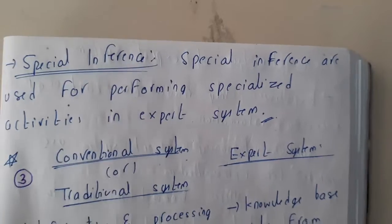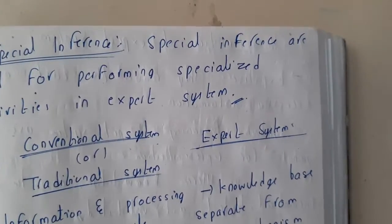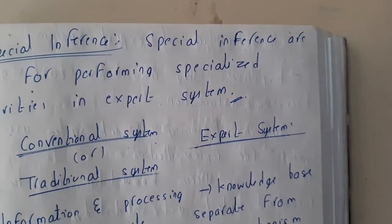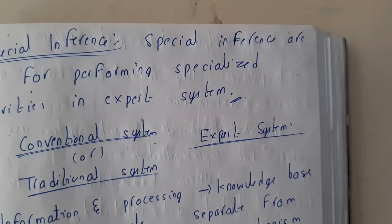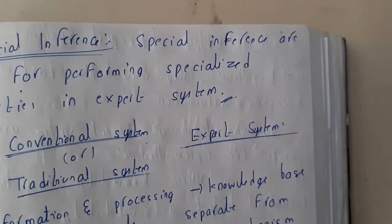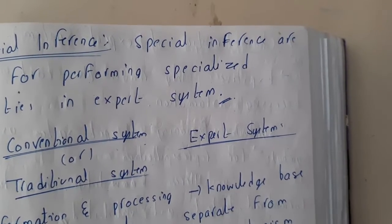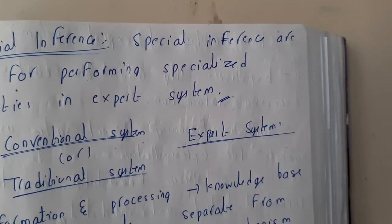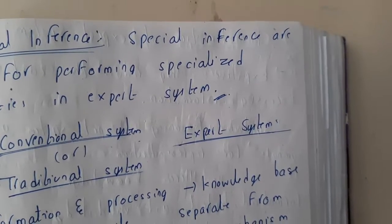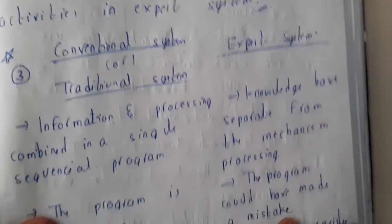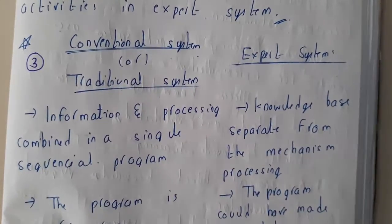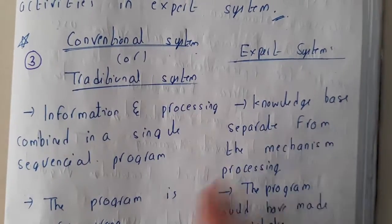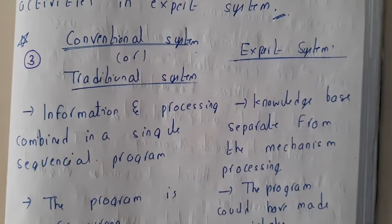I hope everyone got a good idea of the architecture. Please draw the diagram perfectly and give three to four lines of explanation for each component. In the next lecture we'll be going through the differences between traditional systems and expert systems. Thank you for watching.